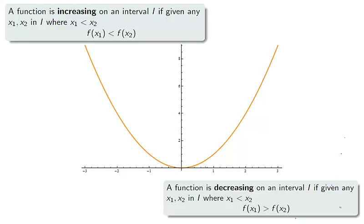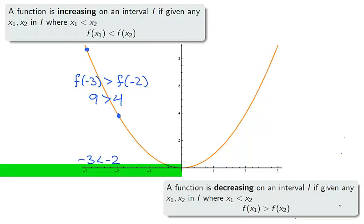A function is decreasing on an interval if we can choose any two points from that interval and the function is smaller on the larger x value. The interval negative infinity to 0 is decreasing. The value negative 3 is less than negative 2, while f(−3) is greater than f(−2).